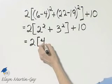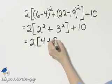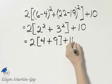2 squared is 4 plus 3 squared. That's 3 times 3. That's 9. Then plus 10.